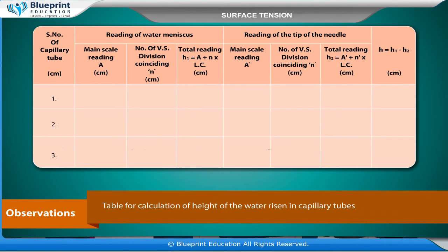Reading of the tip of the needle: main scale reading A', number of V.S. divisions coinciding N' (cm), and total reading H2 = A' + N' × L.C. (cm). The height of capillary rise H = H1 − H2 (cm).